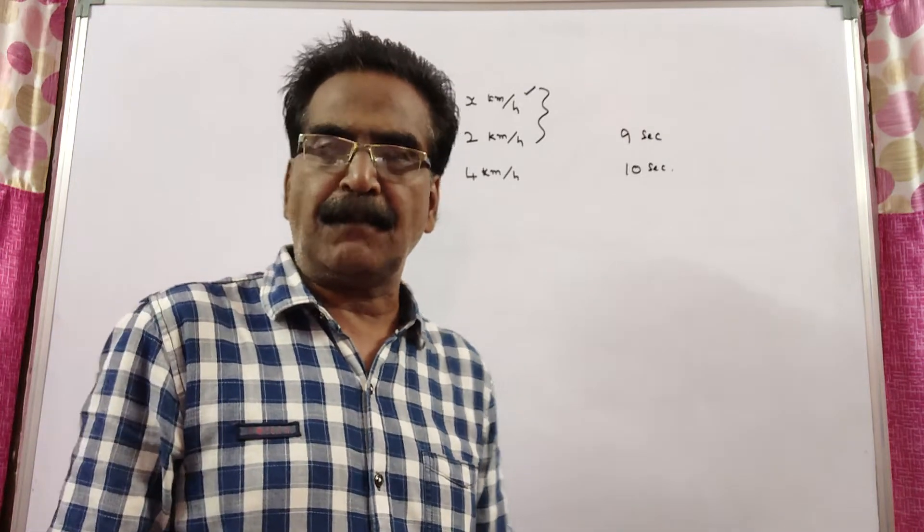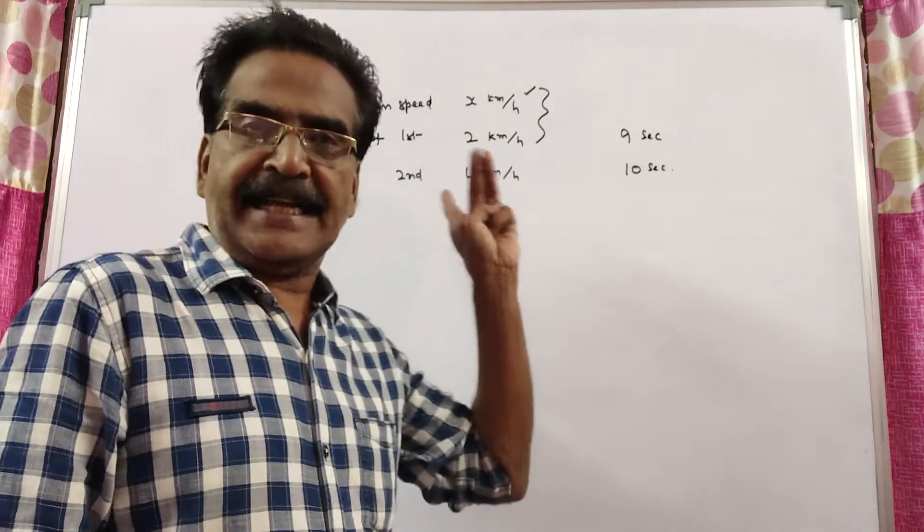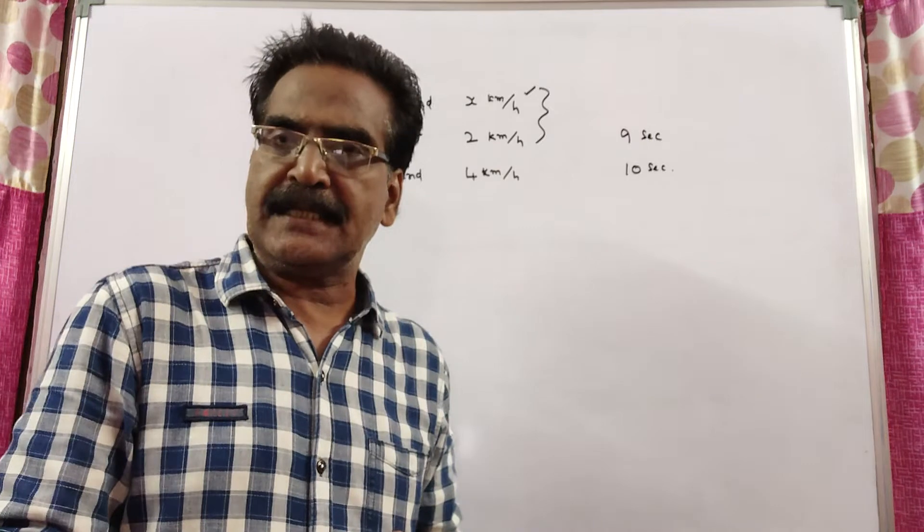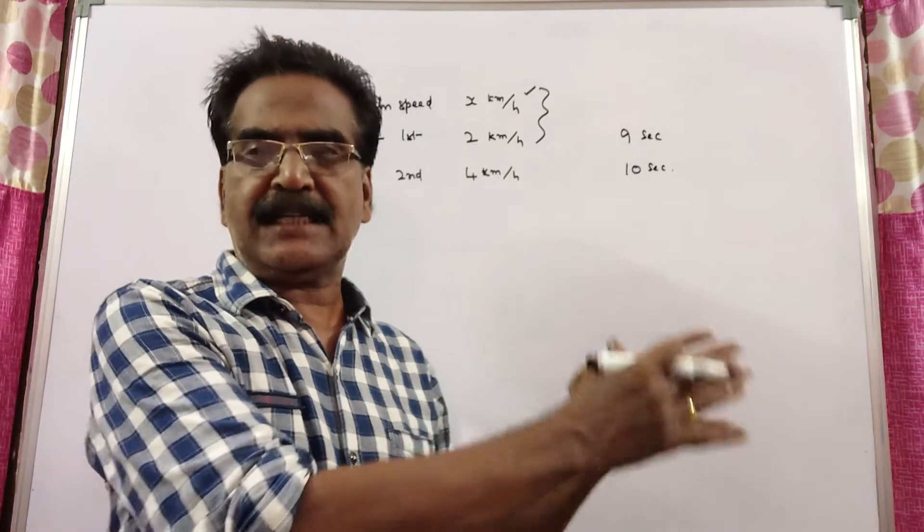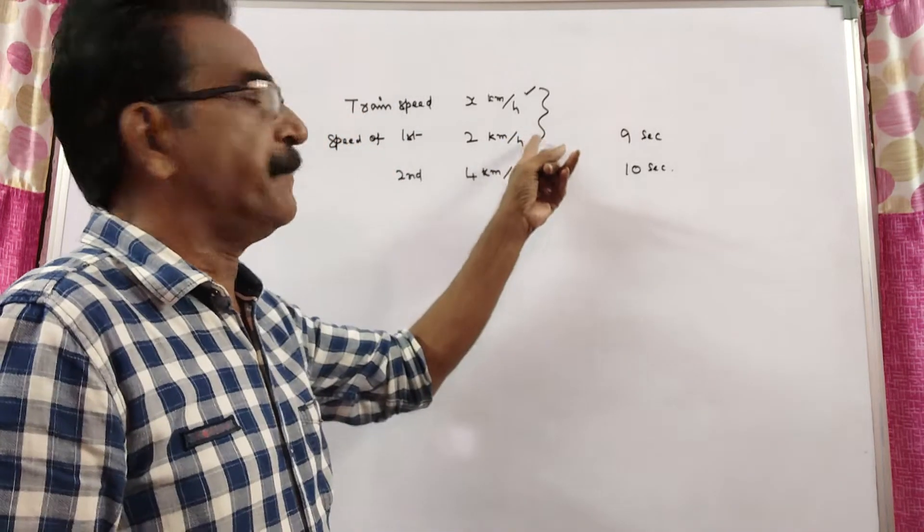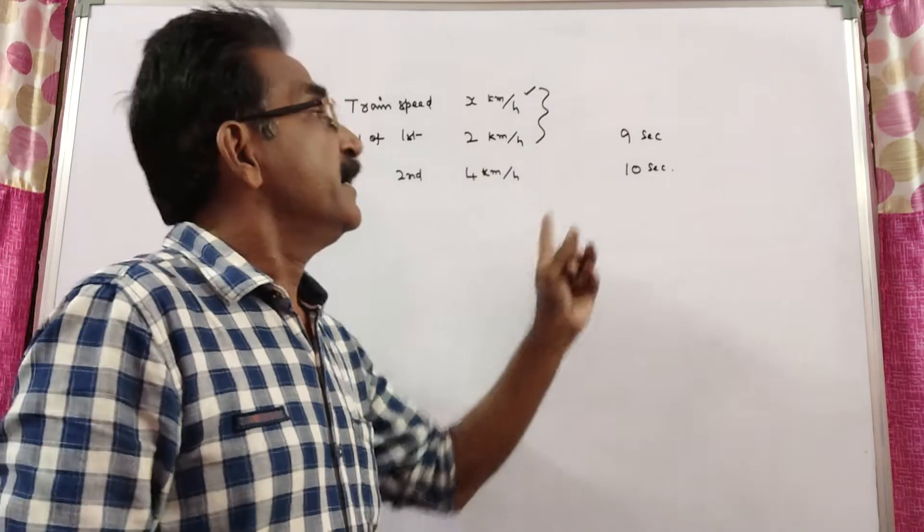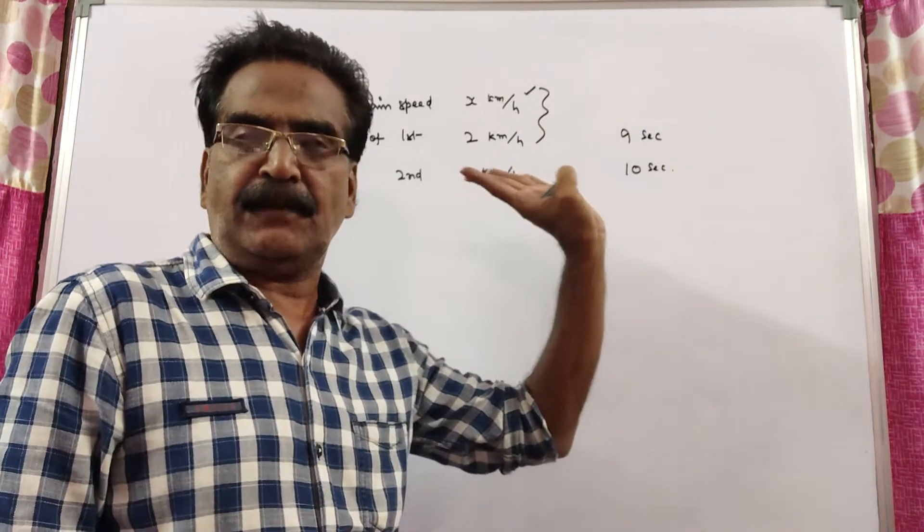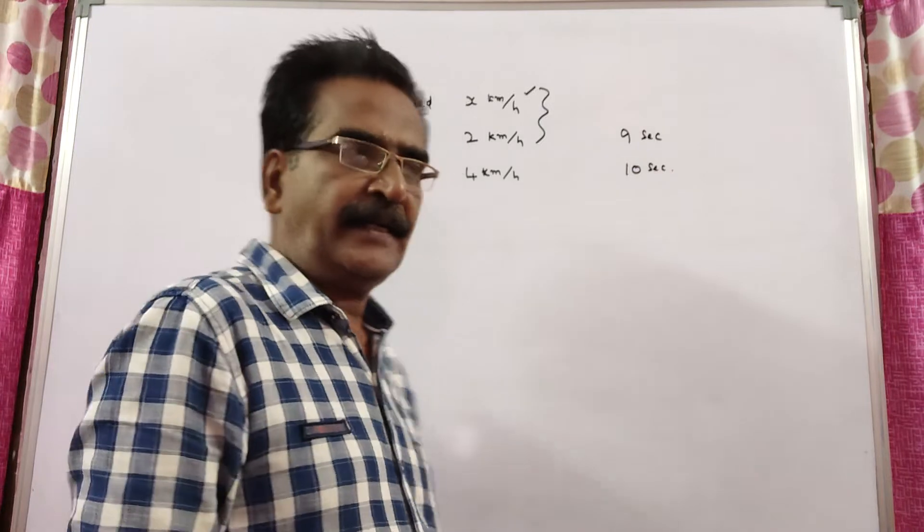Friends, the problem is given in the description box. See friends, a train overtakes 2 persons moving in the same direction of the train with 2 kmph and 4 kmph speeds in 9 seconds and 10 seconds respectively. Then what is the length of the train?